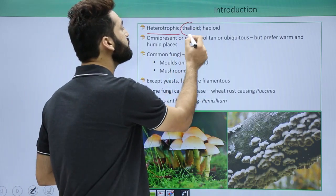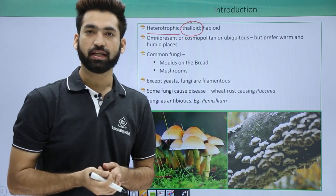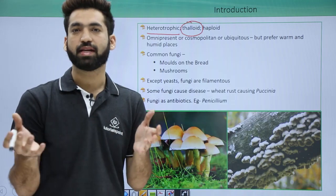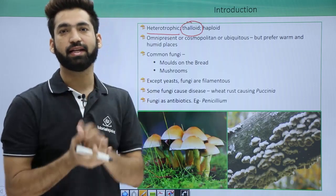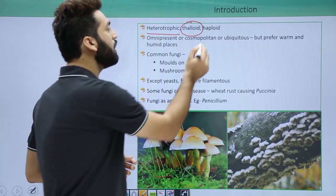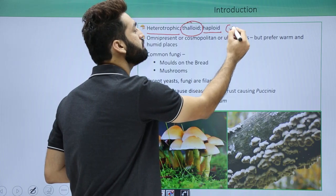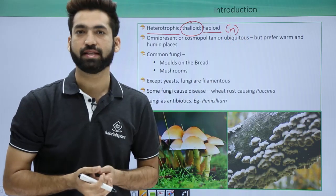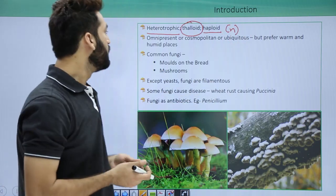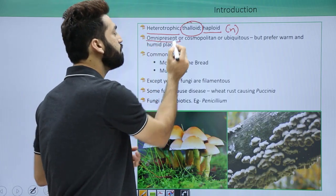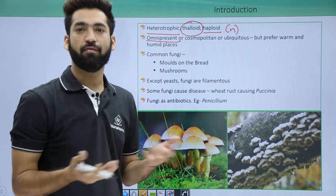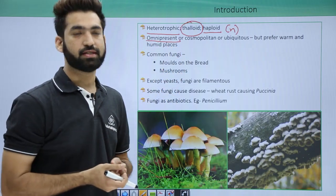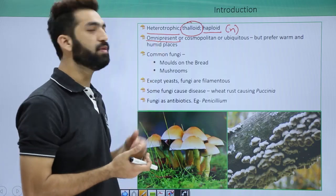The body of fungi is thalloid — meaning there are no roots, stem, or leaves. The body is just like a thallus, and the body is haploid. They will always maintain this haploid nature. Fungi are present everywhere; they are seen in every nook and cranny of the environment.